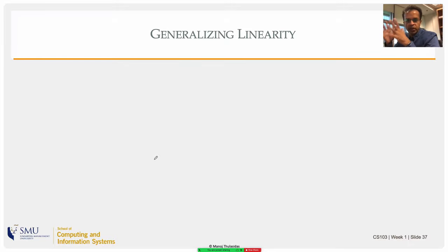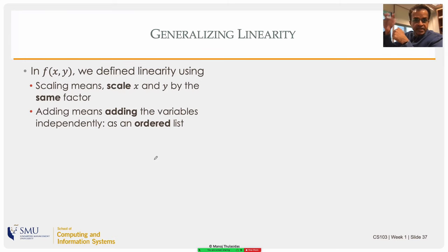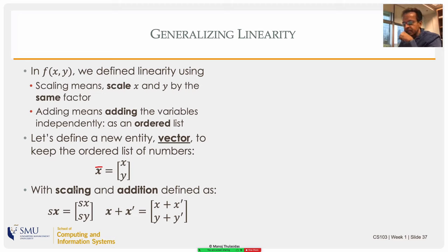Let's generalize linearity. For f(x, y): scaling means scale both x and y simultaneously by the same factor; adding means add corresponding elements. This gives the notion of an ordered list — and that actually leads to the notion of a vector. A vector x (in bold) is an ordered pair of numbers x and y. When you scale it by scalar s, you scale both elements by s. When you add two vectors, you add corresponding elements. So I'm defining an entity called a vector along with its scaling and addition operations.